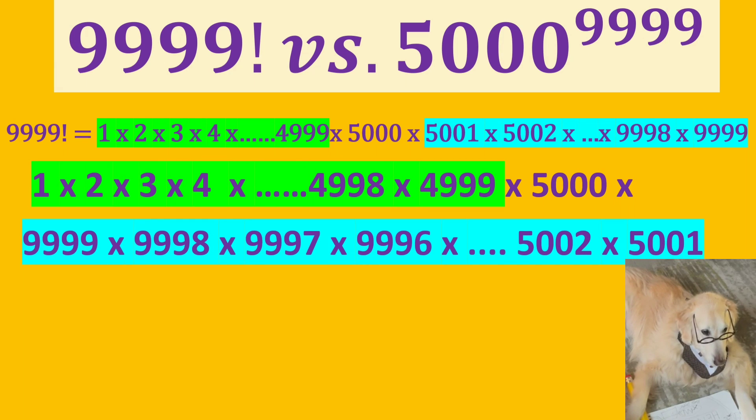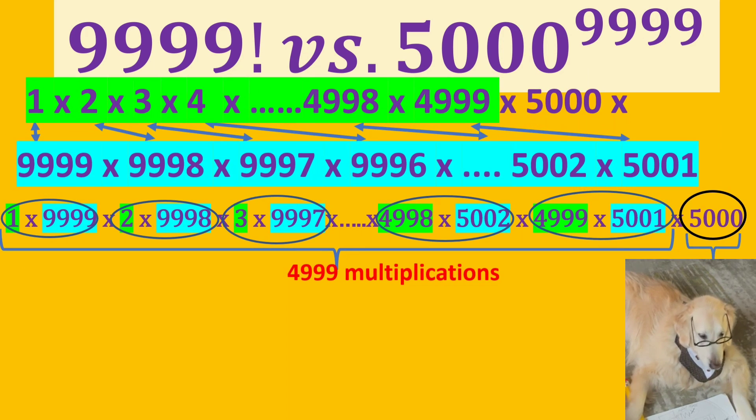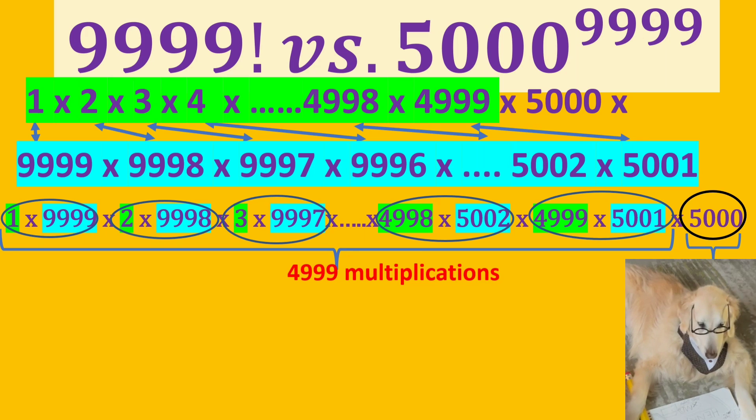We can write the blue part in reverse direction like this. And we can rewrite them as pairs like in the circles. There will be 4999 multiplications of those pairs. And also there is one 5000.